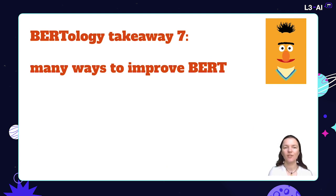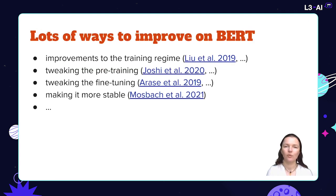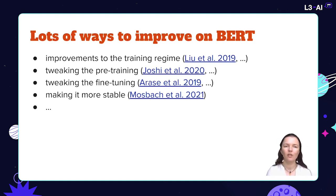Takeaway number seven is that there are many ways to improve BERT. Similar to how we had hundreds of modifications of Word2Vec, there are now many studies proposing different modifications to transformer-based encoders. Our survey lists studies proposing improvements to the training regime, pre-training, fine-tuning, model stability overall, and many other tweaks.